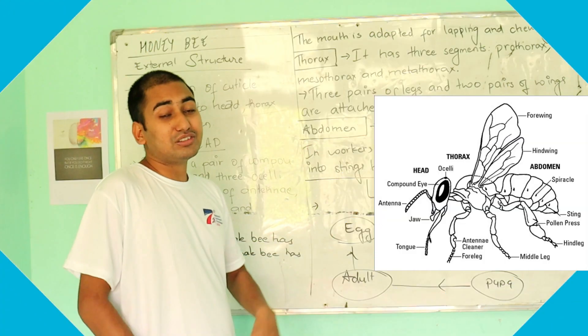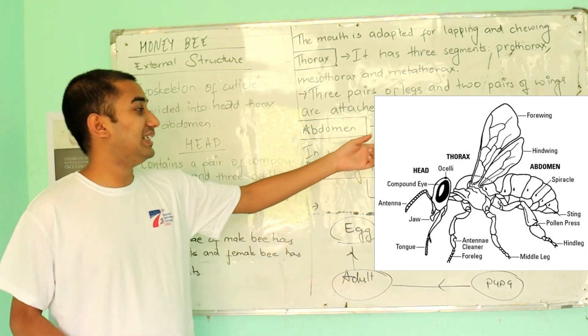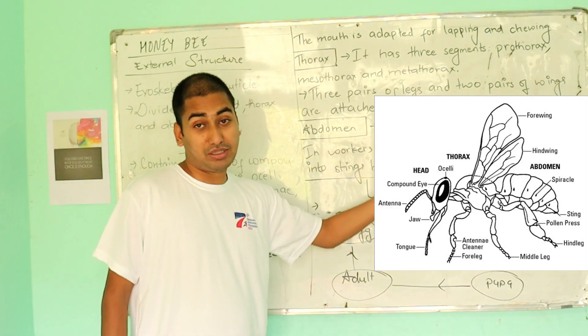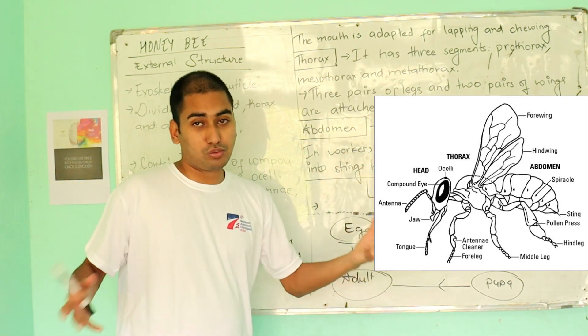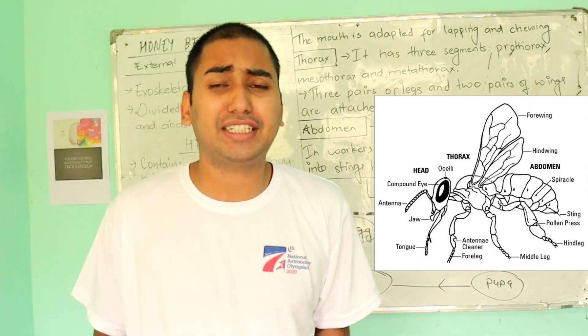In the abdomen, there are 9 segments, and they are differentiated.